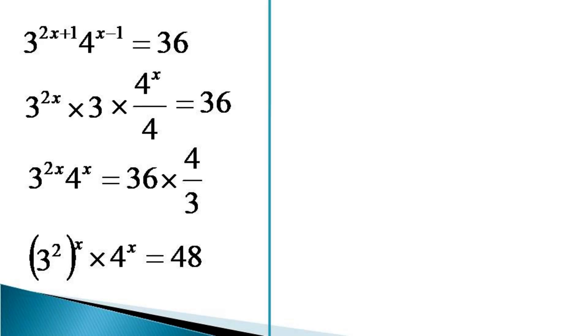This equation is simplified as 9 raise to the power x into 4 raise to the power x is equal to 48. On the left hand side, both of the bases can be multiplied together and the resulting equation becomes 9 into 4 whole raise to the power x is equal to 48.